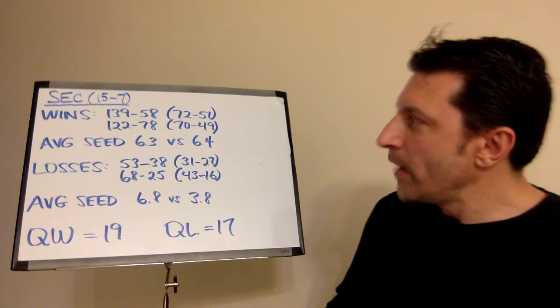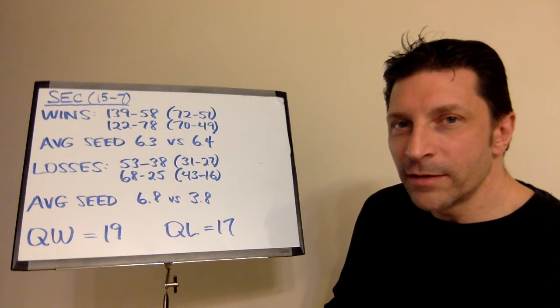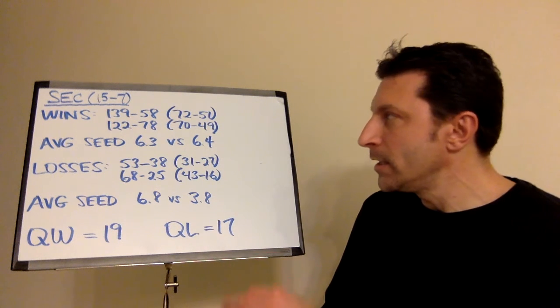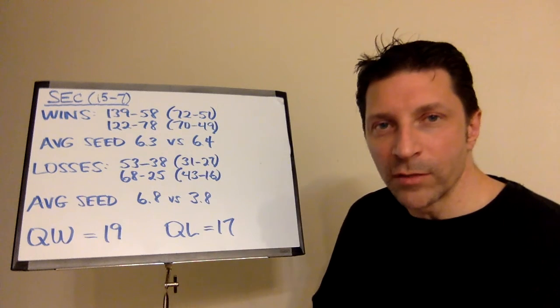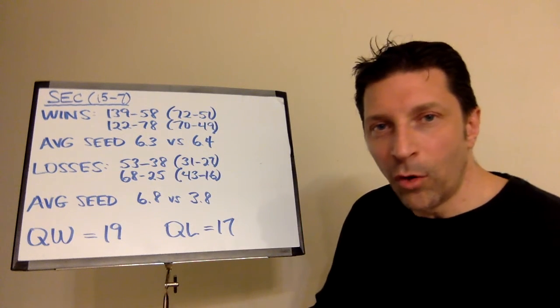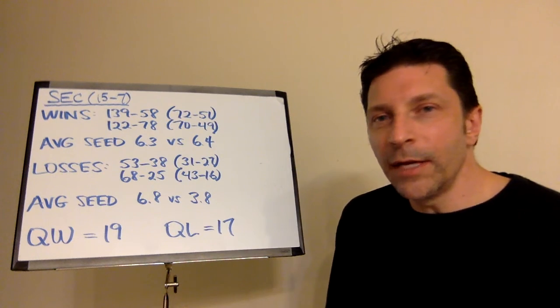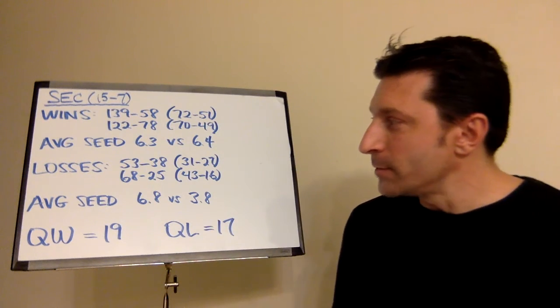So, the average win for the SEC had a 6.3 seed defeating a 6.4 seed in the other conference. Which, if that's one game, it doesn't mean a whole lot. Of course, a 6 seed could beat another 6 seed in another league. But they did it 15 consecutive times.